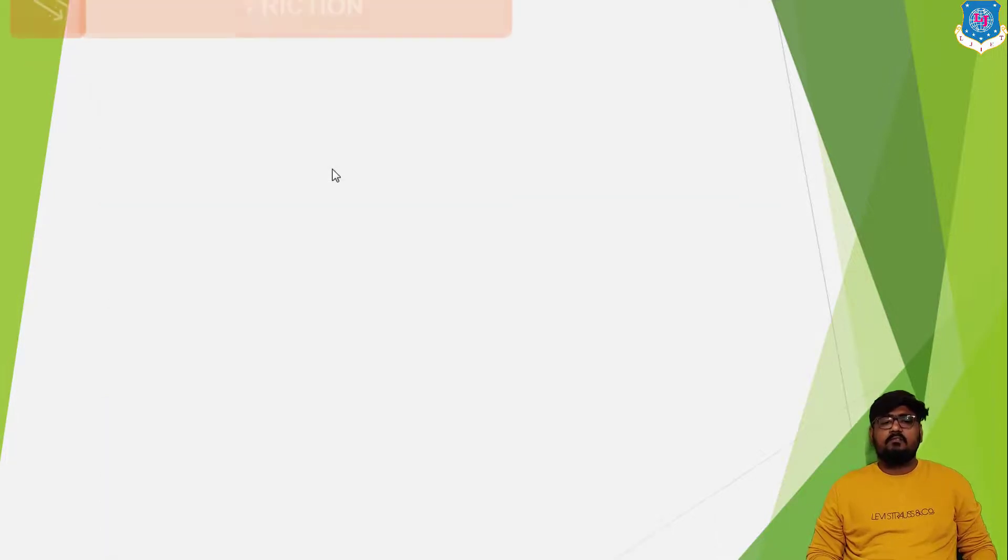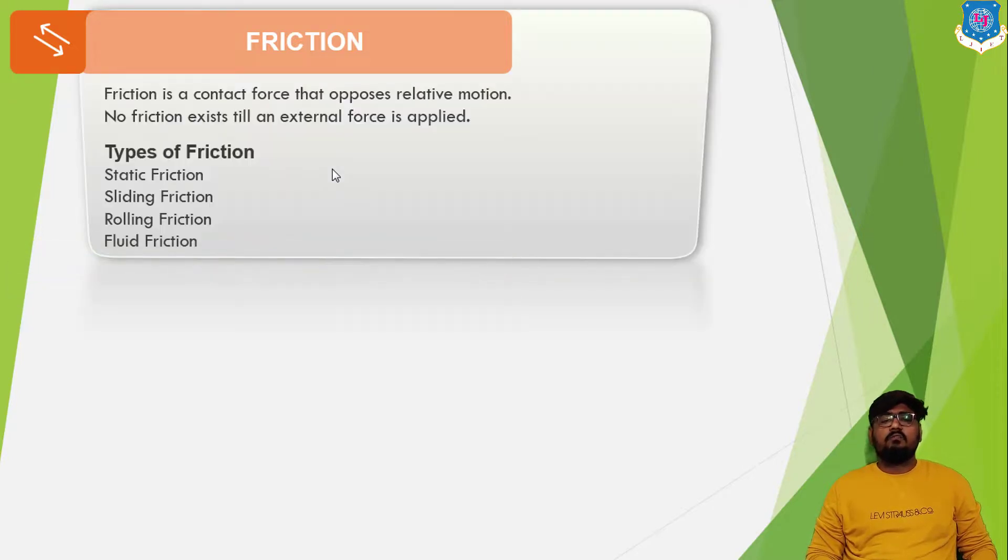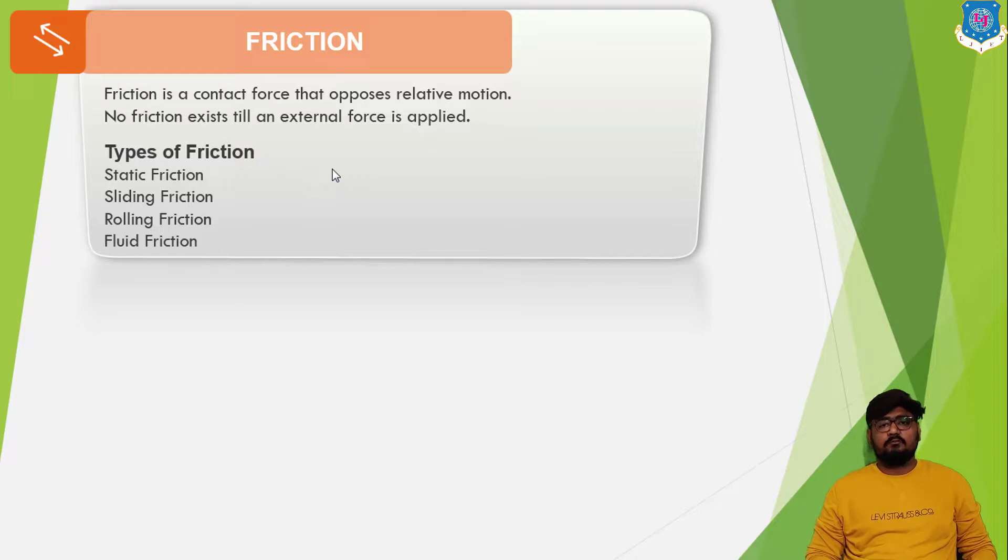Now the next topic is friction. When we throw a ball on the floor, it starts moving with some velocity. But ideally, no force should be acting in the direction of motion. And according to Newton's first law of motion, the ball should keep on rolling forever. But this does not happen. Instead, the ball stops after moving a certain distance. So a force must be acting on it. We call this force as the friction force.